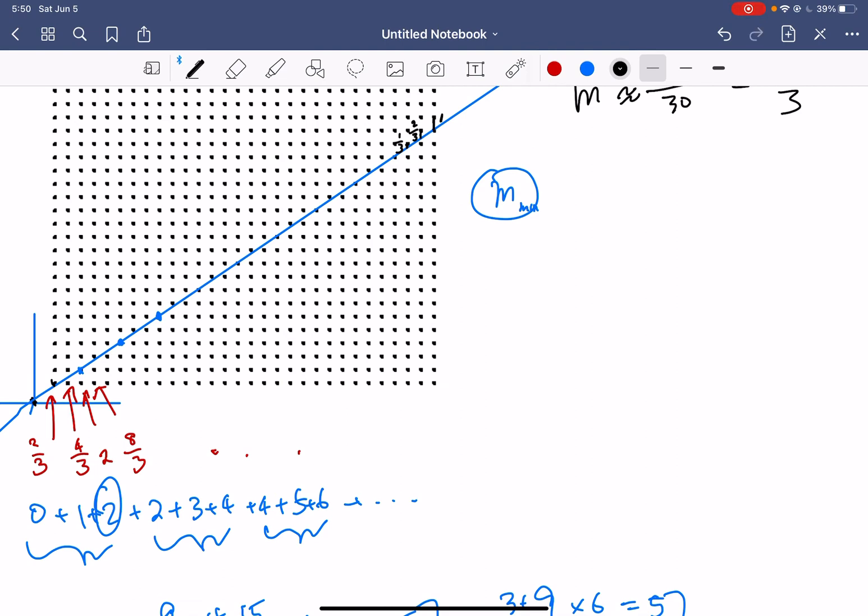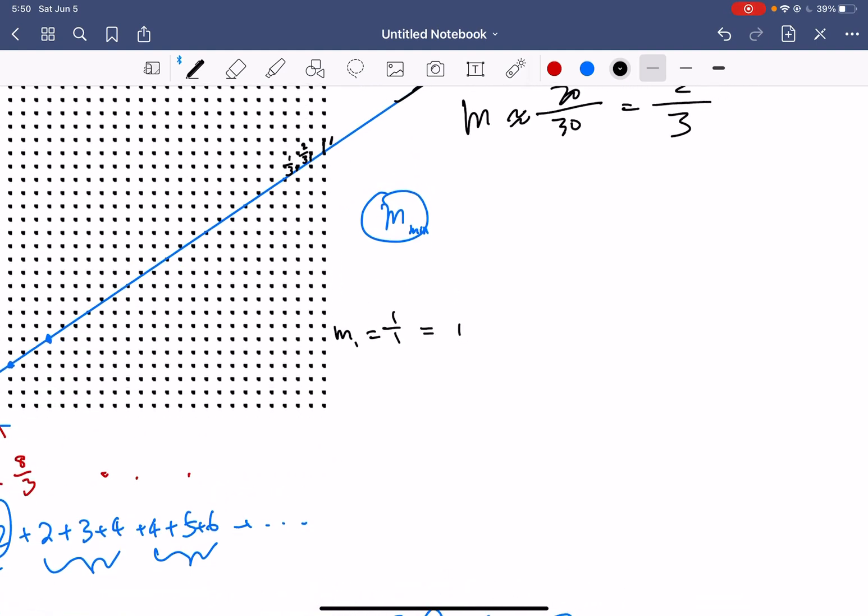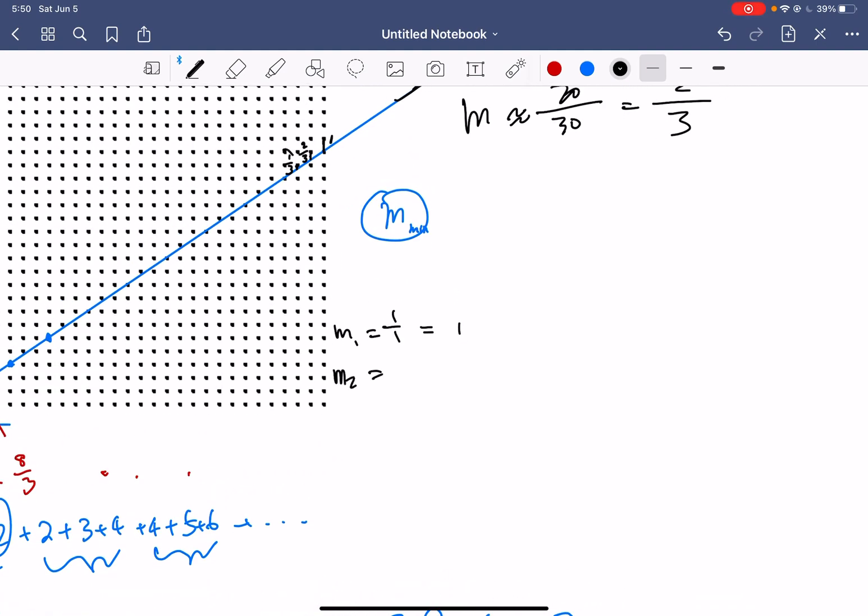So that would be 1, right? That would be 1 just over 1, so that would be a slope of 1. That is 1 candidate, we want to find the minimum. And the second candidate would just be from this, which is, we don't actually need to count it out, but we just want to, okay?